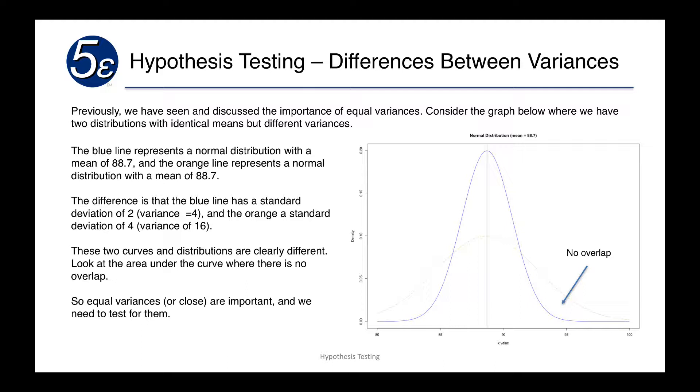They both have an identical mean of 88.7. However, their standard deviations are different. The blue curve has a standard deviation of 2, which means the variance is 4. And the orange has a standard deviation of 4, which means its variance is 16.